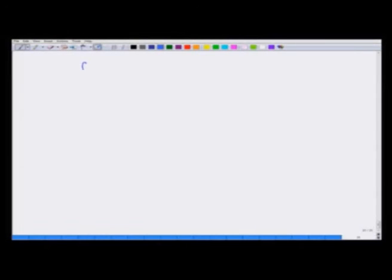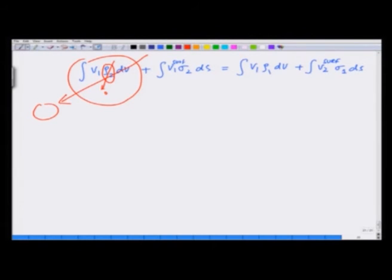To do this I am again going to write: integral v_1 rho_2 dv plus integral v_1 sigma_2 on the surface ds is going to be equal to integral v_2 rho_1 dv plus integral v_2 on the surface sigma_1 ds. v_1 I do not know, but rho_2 certainly is 0, so this term drops out. v_1 on the surface is 0, so this term is 0 and therefore this entire term also drops out. On the left hand side I get 0.